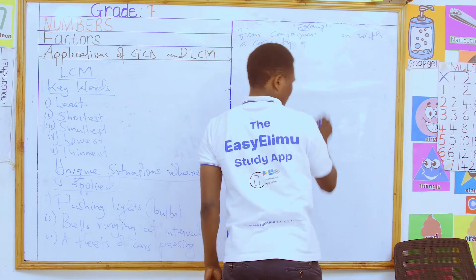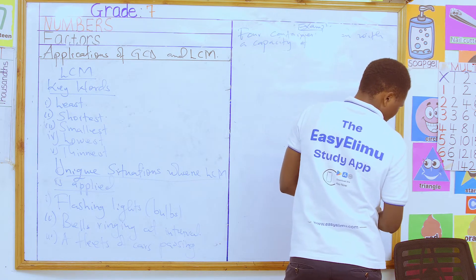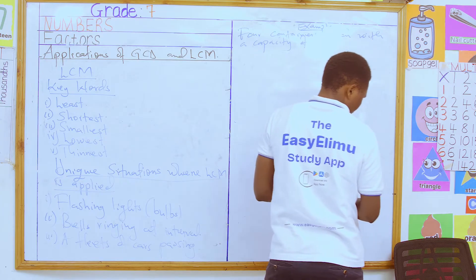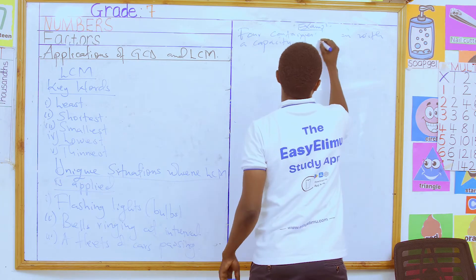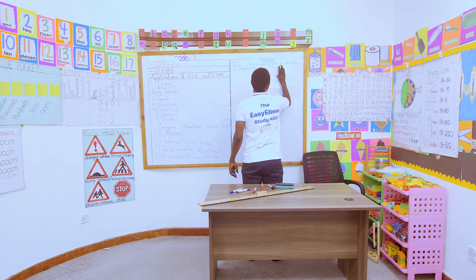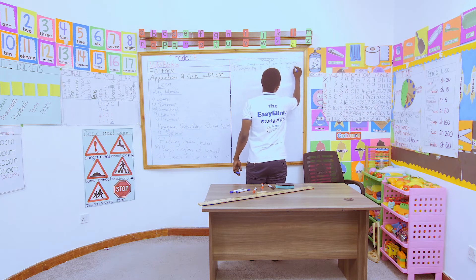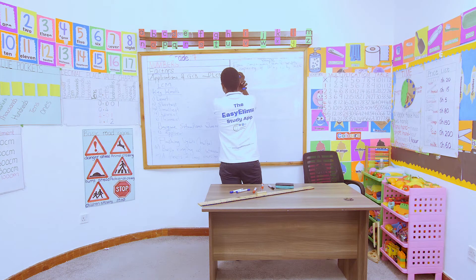For example: four containers, each with the capacity of 10 liters, 15 liters, 20 liters, and 25 liters.